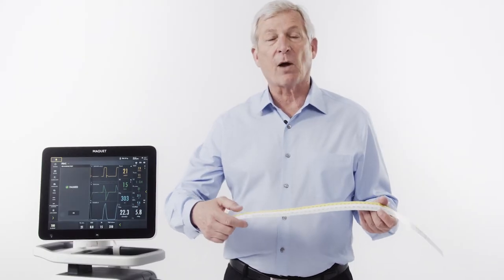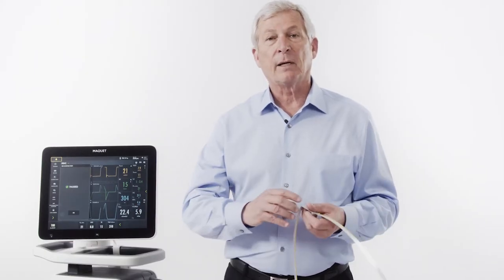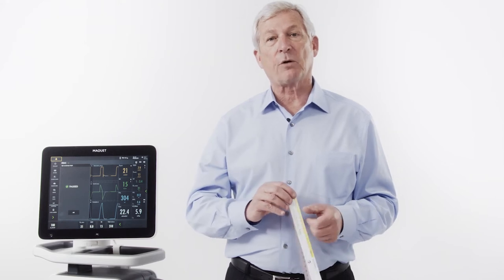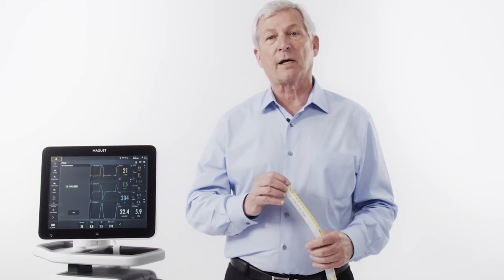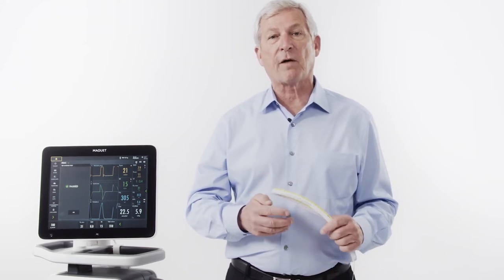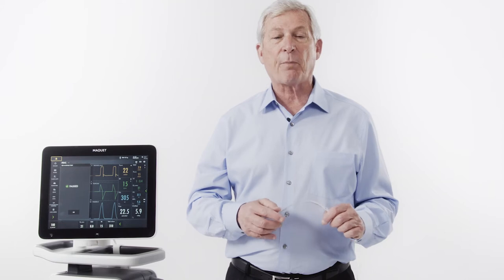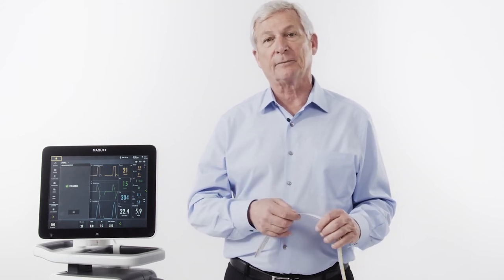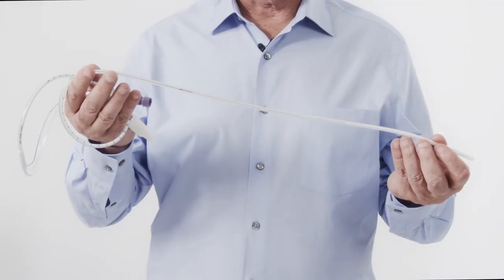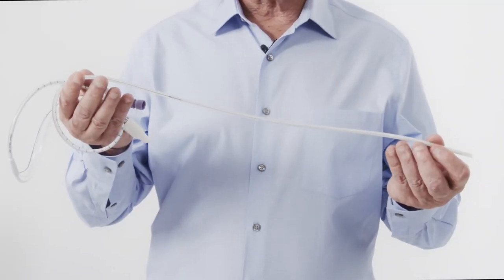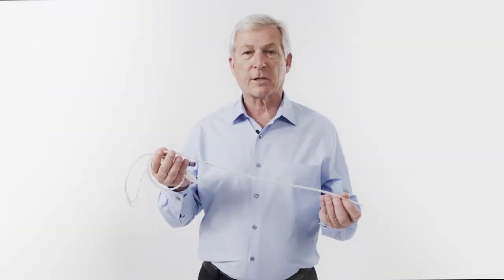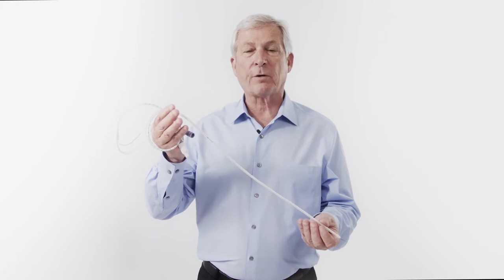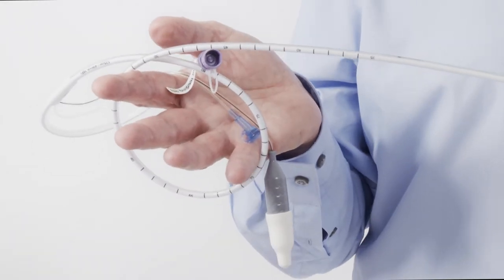If we use a regular tape, the servo ventilator will help you determine the proper insertion distance of the EDI catheter. The EDI catheter shown here is a 16 French catheter. It comes pre-lubricated — simply dip the tip of the catheter in water to activate the pre-lubrication.